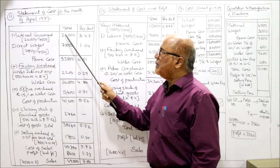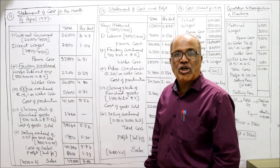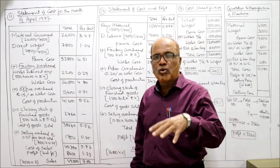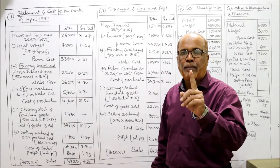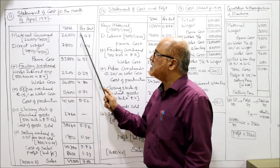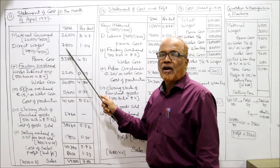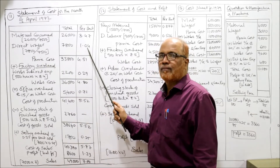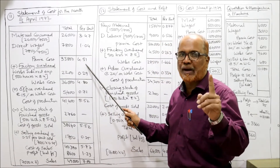Material total is 26,000 as given. Units manufactured are 7,500, so per unit material = 26,000 ÷ 7,500 = 3.47. Direct wages total 7,800 and 7,800 ÷ 7,500 = 1.04 per unit. Prime cost total is 33,800 and 4.51 per unit.